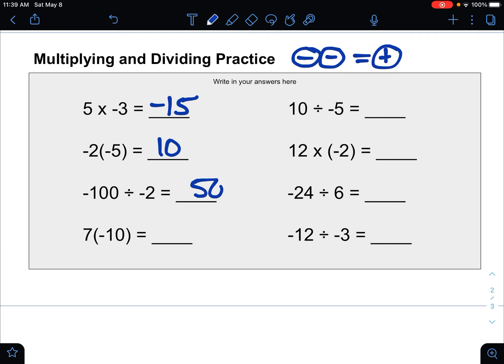The one after it, we're dividing 100 by 2, which would be 50, and again two negatives here would make a positive. 7 times 10 would be 70, but this time only one negative, so negative 70.